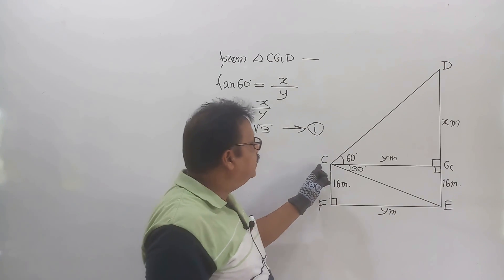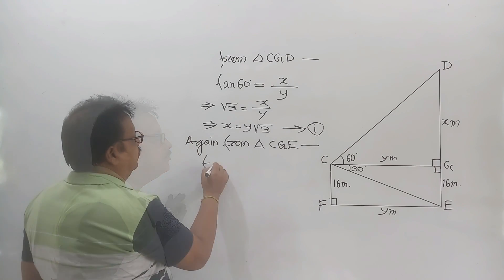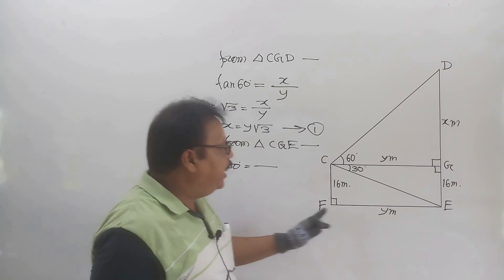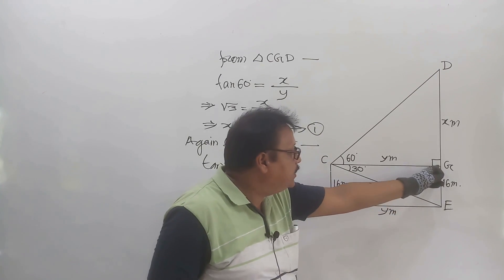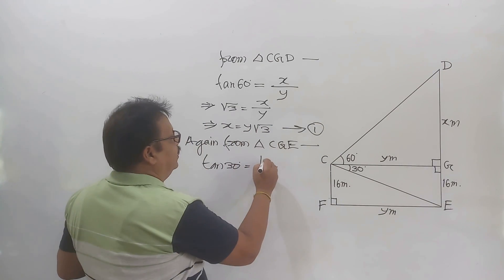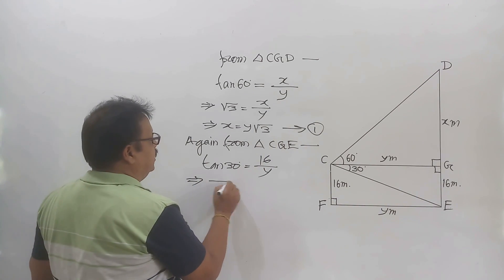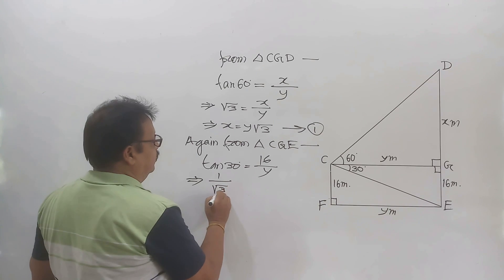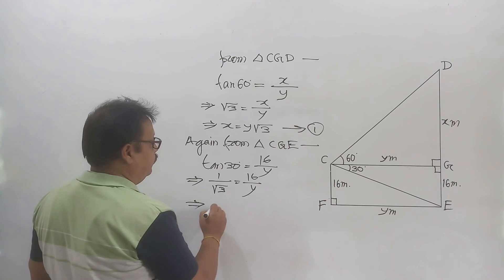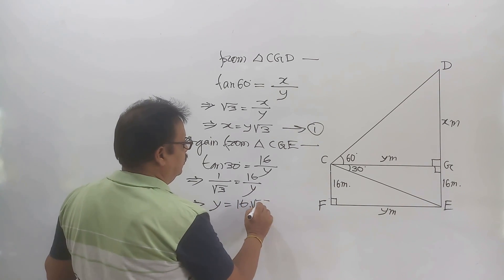Again, from triangle CGE, tan 30 degrees equals height over base, that is 16 over y. This implies 1 over root 3 equals 16 over y, which gives y equals 16 times root 3.